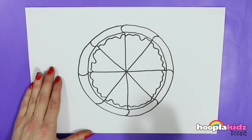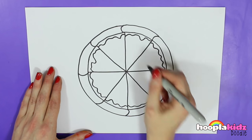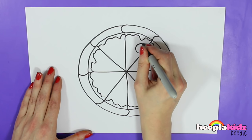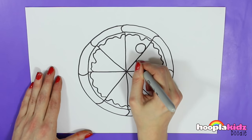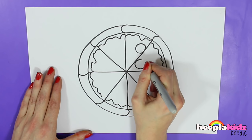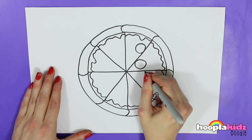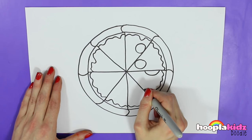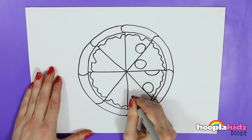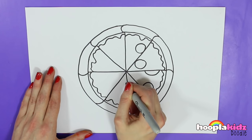And what do we need now? Yes, some toppings. So I'm adding some circles here which I think might be pepperoni or something like that. But here you can be as creative as you want because of course you can put any topping you like on pizza.